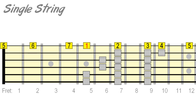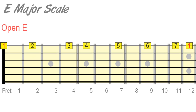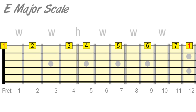Start with the open string roots. Let's say we were playing the E major scale — our open E note will be the root and we'd play the scale up to the 12th fret octave. Using half and whole steps we can visualise the scale formula as: whole, whole, half, whole, whole, whole, half.